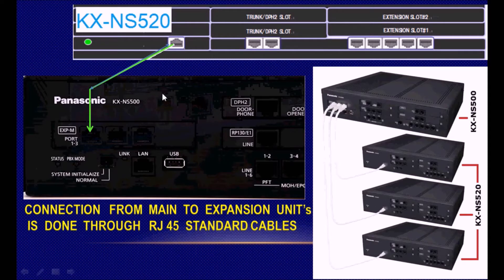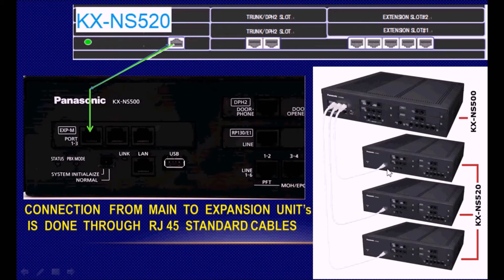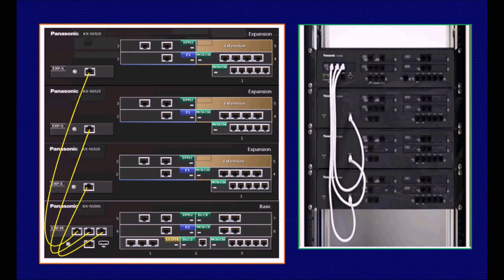The expansion units are connected to the main unit through RJ45 cables. From each expansion unit to the main unit we must connect an RJ45 straight cable. A maximum of three expansion units can be connected, and we have three interfaces for three expansion units. This is the maximum configuration you can get from the KX-NS500, but capacity can be expanded further by other means.